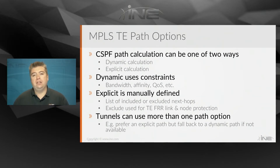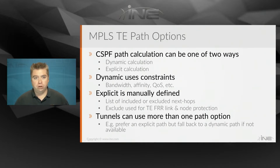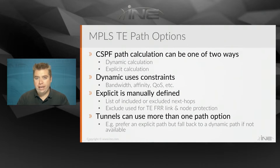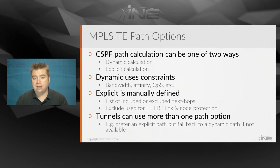With explicit paths, this is typically used with link protection and node protection, where you're using it to exclude an individual node or an individual link to make sure it's not included as part of the path calculation. You can also do an explicit calculation specifying every hop individually — going from point A to B to X to Y — and combine this with dynamic path options for failback.